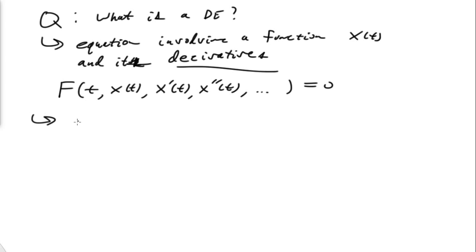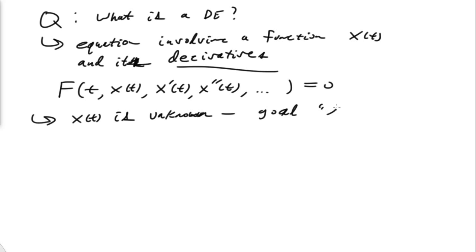The idea here is that the function x of t is unknown. And the goal, of course, is to — and I put it in quotes — solve for x.